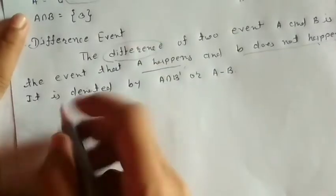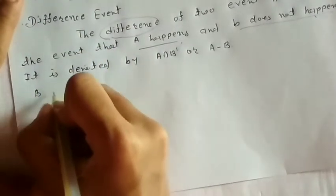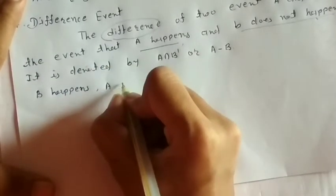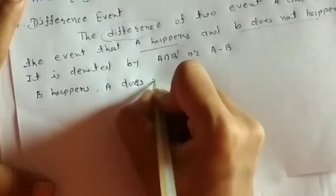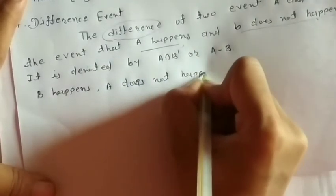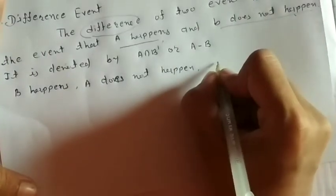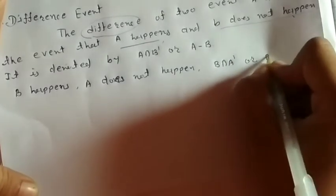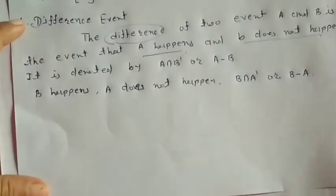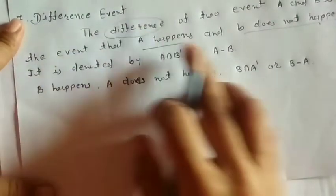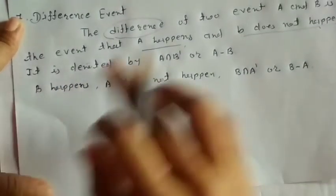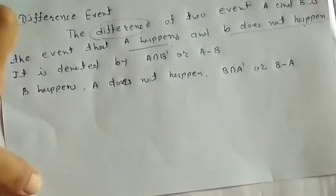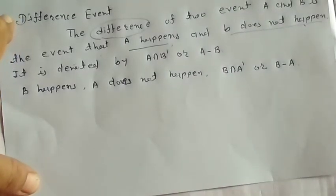Similarly, if B happens but A does not happen, it is denoted by B intersection A-dash, or B-dash-A. The difference event means the event where A occurs but B does not happen — that is not possible for B. So we call it the difference event.